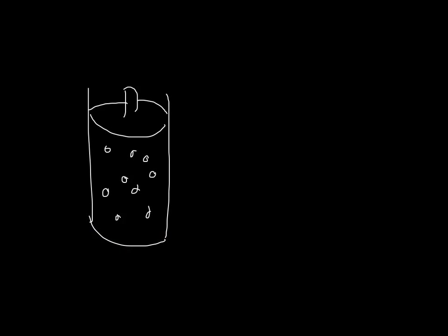The first thing I'm going to do is imagine that I have this gas at a certain pressure P, and I let it expand — the gas is pushing the piston up. I'm interested in knowing how much work this gas did against the piston, because all this work that the gas is doing is energy that it is losing. This work requires energy, so the energy must be coming from the gas. Because the gas is doing work, it will lose some energy.